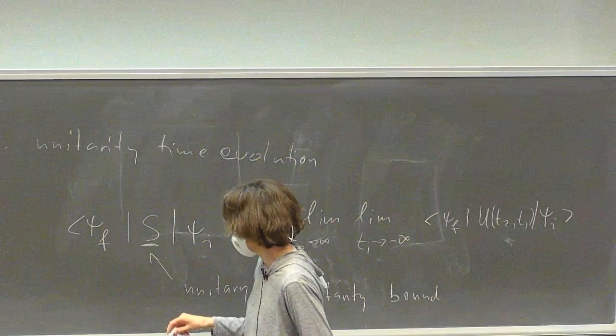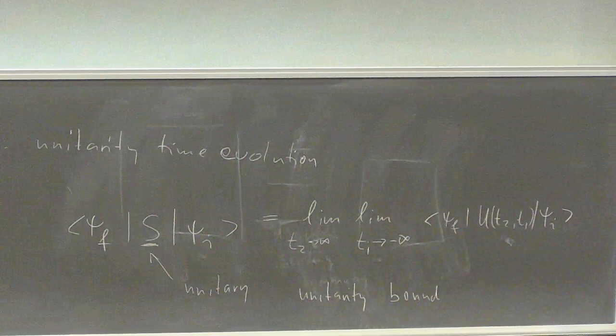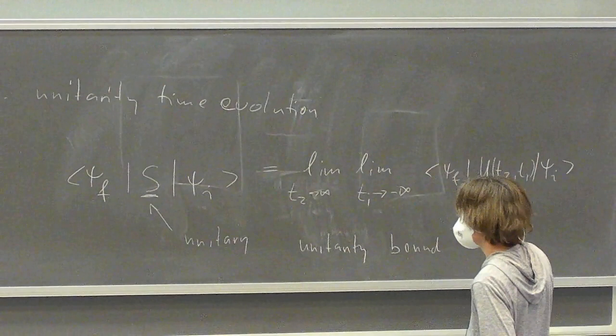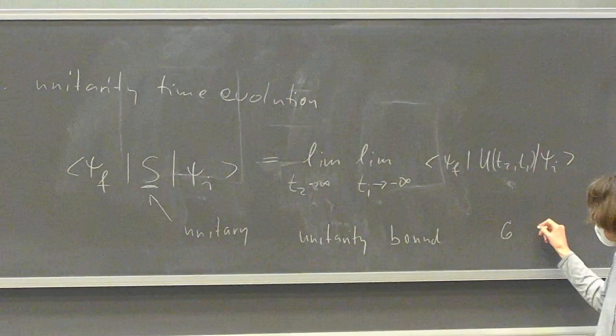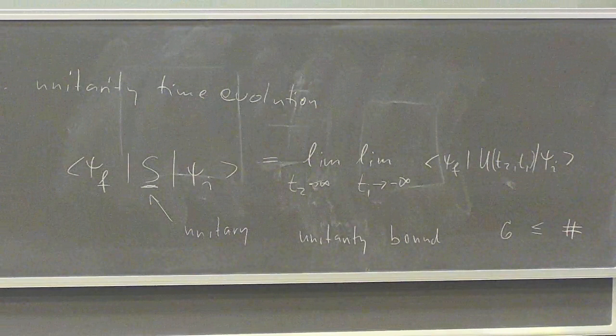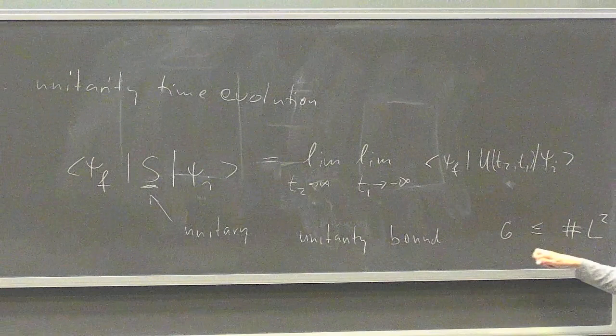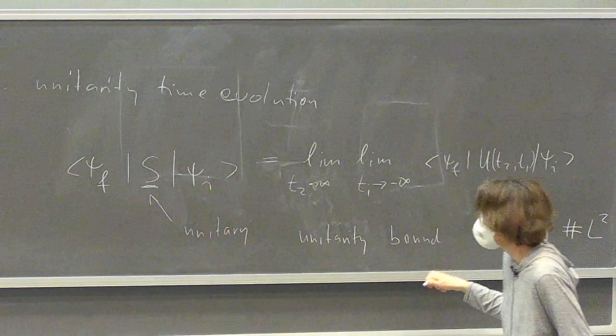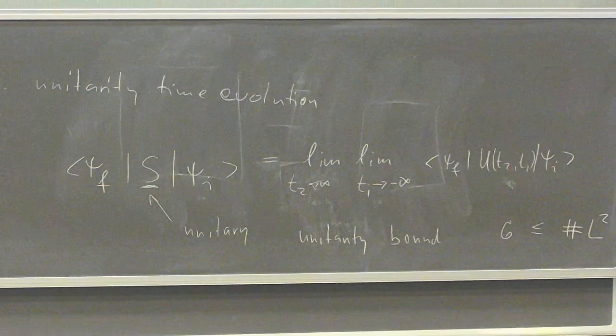To make this more concrete: if I look at the cross section, there's a limit. We need a length squared to get the units right, so we have a cross section that is unitarity limited — meaning because we can't create or lose anything, that cross section has to be smaller than or equal to some number times L squared.